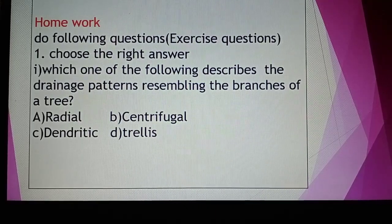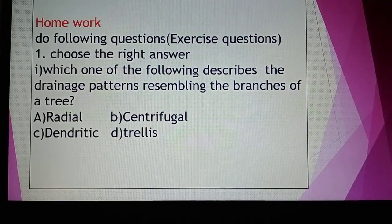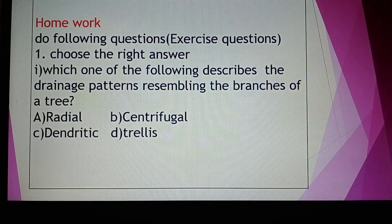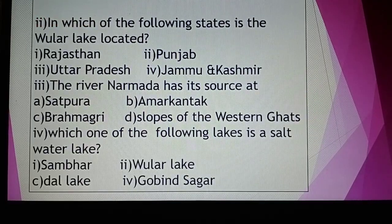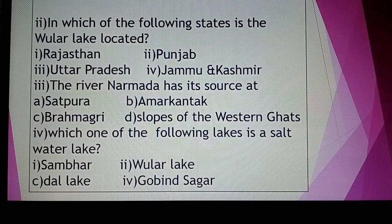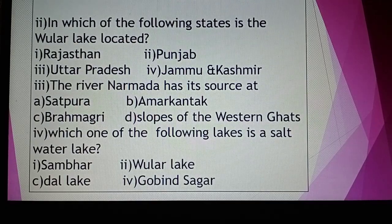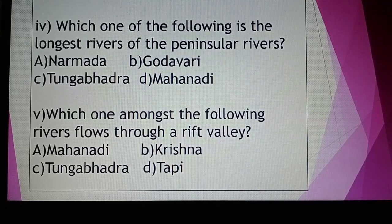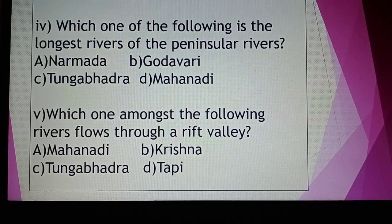Today's homework exercise questions. Question 1 — Which one of the following describes the drainage pattern resembling the branches of a tree? Options: radial, centrifugal, dendritic, trellis. Question 2 — In which state is Wular Lake located? Options: Rajasthan, Uttarakhand, Punjab, Jammu and Kashmir. Question 3 — The river Narmada has its source at: Satpura, Brahmgiri, Amarkantak, or slopes of the Western Ghats. Question 4 — Which one of the following is a saltwater lake? Sambar Lake, Dal Lake, Wular Lake, or Gobind Sagar. Question 5 — Which is the longest peninsular river? Narmada, Godavari, Tungabhadra, or Mahanadi. Question 6 — Which river flows through a rift valley? Mahanadi, Tungabhadra, Krishna, or Tapi.